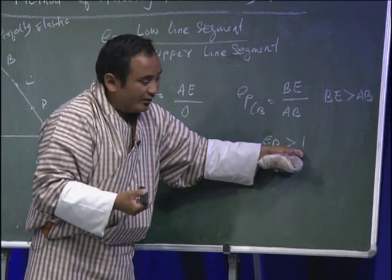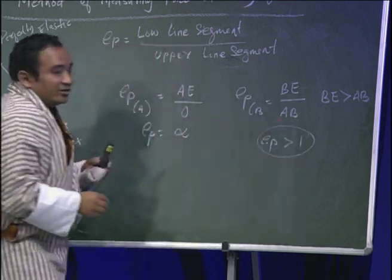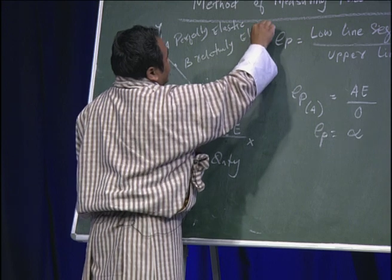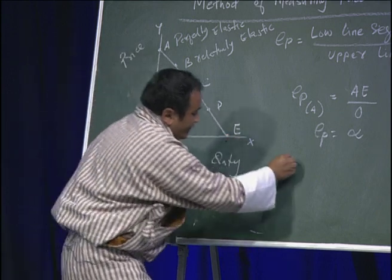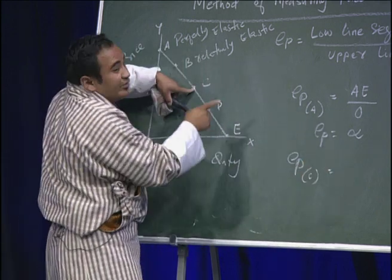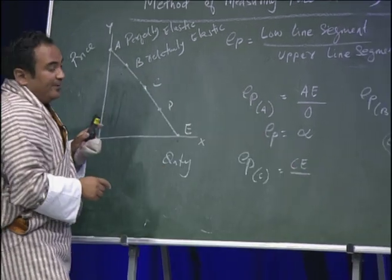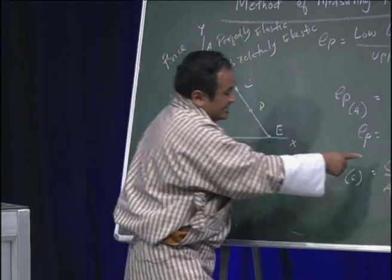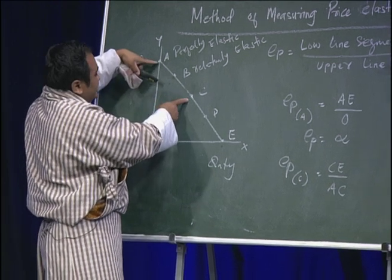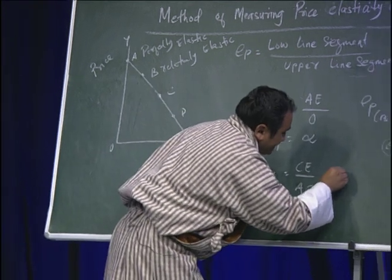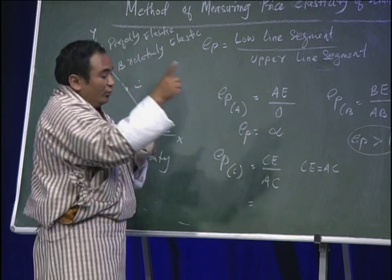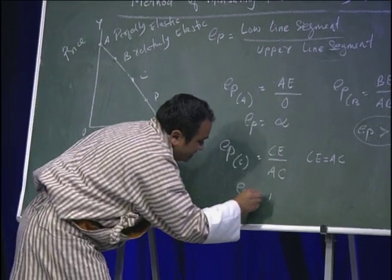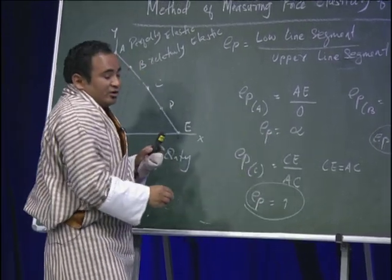When EP is greater than 1, we conclude it is relatively elastic demand. At point C, EP equals lower segment CE divided by upper segment AC. Looking at the lengths, CE and AC are equal — AC equals CE. Since the numerator is equivalent to the denominator, the answer is equal to 1, meaning EP equals 1, which is unitary elastic demand.